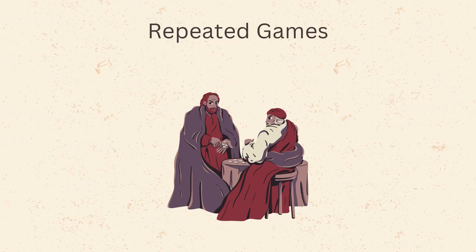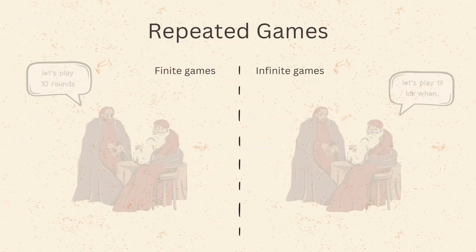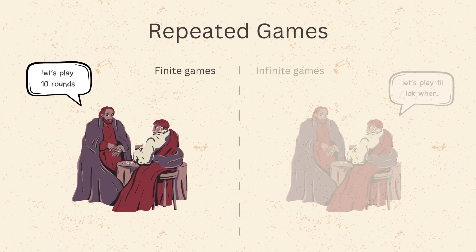Repeated games can be broadly divided into two classes — finite and infinite — depending on how long the game is being played for. Finite games are those in which both players know that the game is being played a specific and finite number of rounds, and that the game ends for certain after that many rounds have been played. In general, finite games can be solved by backward induction.